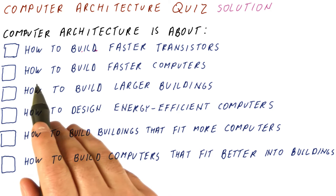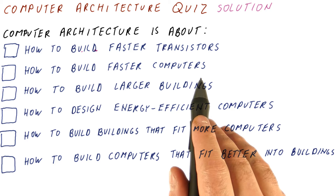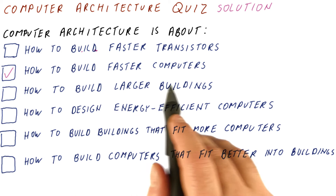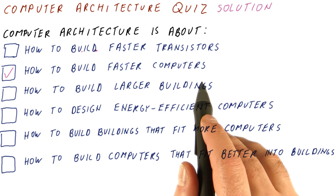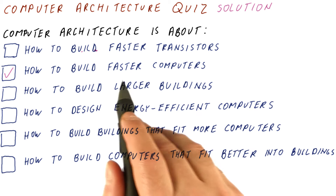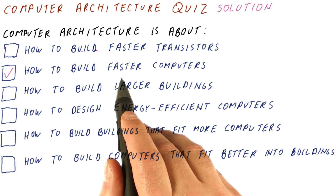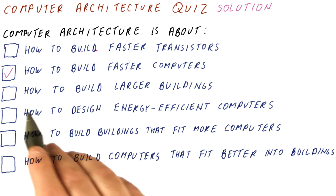Is it about how to build faster computers? It is. One of the possibilities for how computers can be better is if they're faster. So if we need a faster computer, computer architecture is definitely about how to do that.